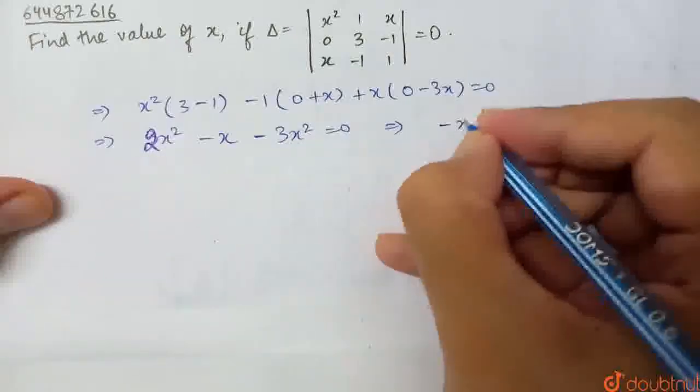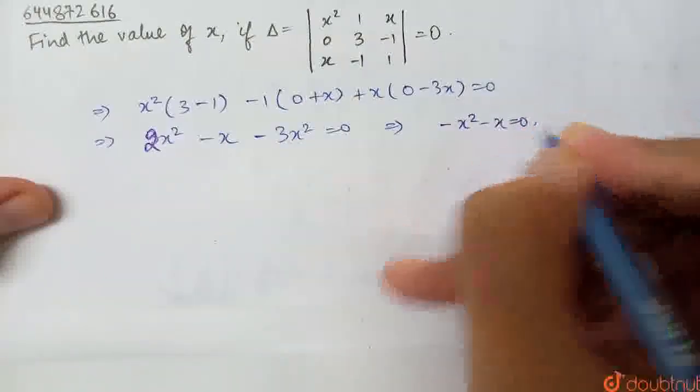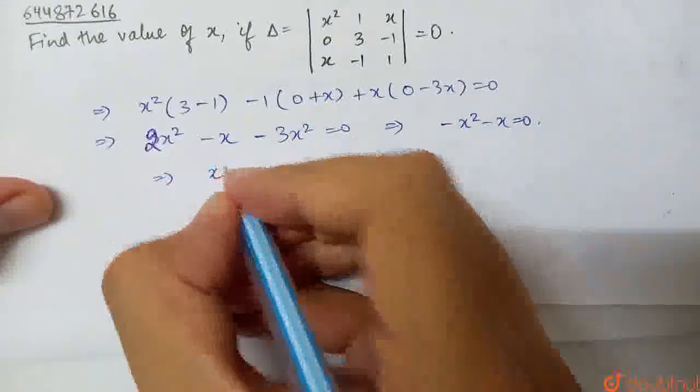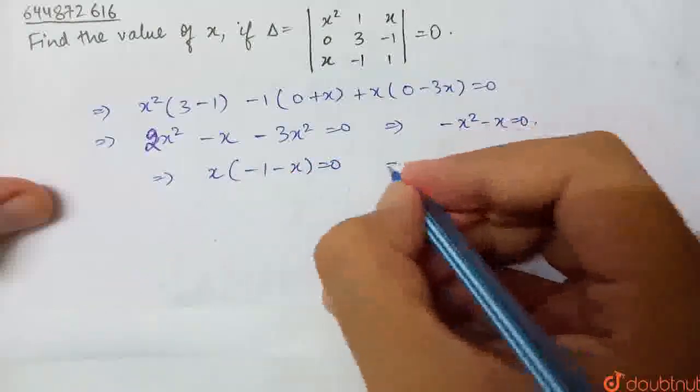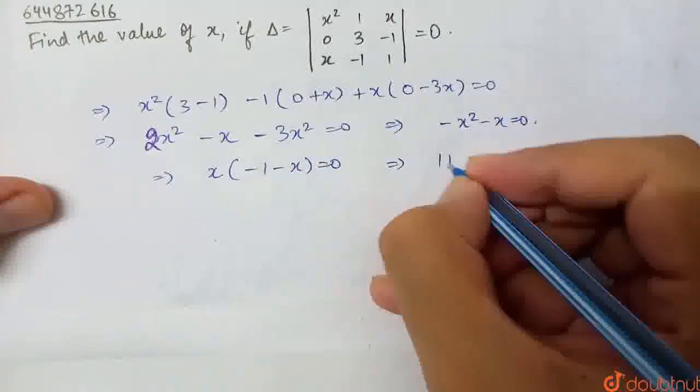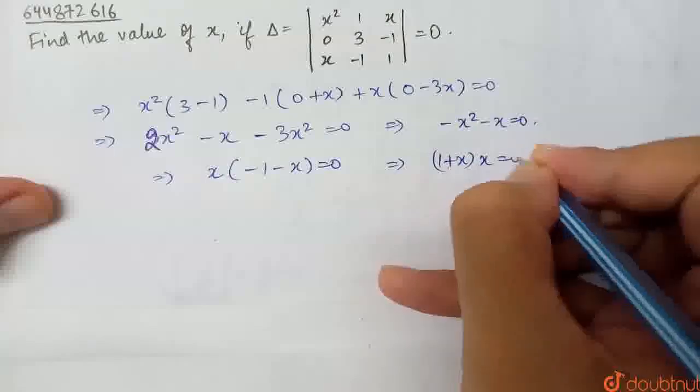So if I solve it, then it will be minus x squared minus x equal to 0. So this is minus 1 minus x equal to 0, and we cancel minus 1. So 1 plus x into x is equal to 0.